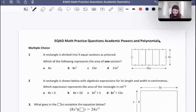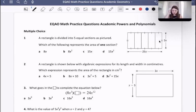Okay, so this first one says a rectangle is divided into five equal sections as pictured. Which of the following represents the area of one section? What we must do to find this out is we're going to find the area of all five sections first, and then we're going to divide that answer by five to find the area of one section. So what's the area of the full thing? The area of the full thing is 25x times 3x, which is 75x squared. Now, to find the area of just one section,